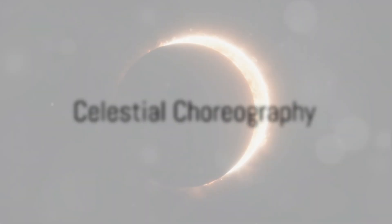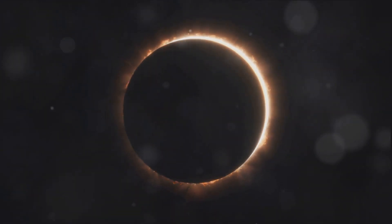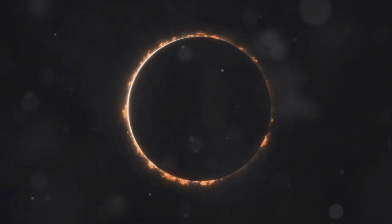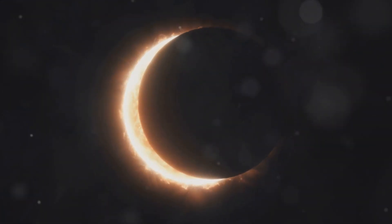Celestial Choreography. A solar eclipse occurs when the Moon passes between the Earth and the Sun, blocking out its light partially or completely. This alignment creates a mesmerizing celestial dance visible from specific regions on Earth.